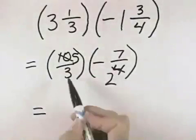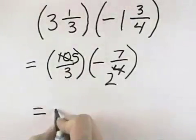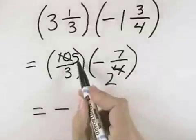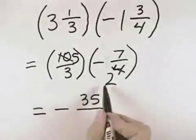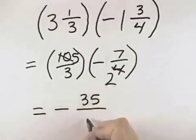So that when we multiply, we have a positive times a negative, which is negative. 5 times 7 is 35, and 3 times 2 for the denominators is 6.